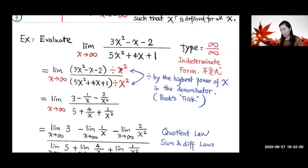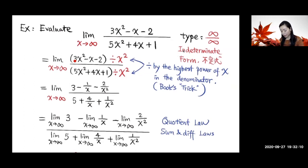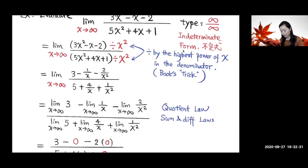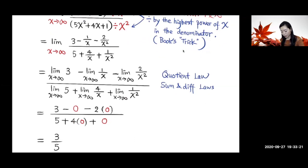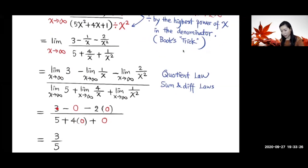The highest power in the denominator is x squared, so we divide everything by x squared. In the numerator: 3x² ÷ x² = 3, −x ÷ x² = −1/x, and −2 ÷ x² = −2/x². In the denominator: the first term gives 5, the second gives 4/x, and the third gives 1/x². By the quotient law, difference law, and sum law for limits, we can break this into separate parts — the limit of a quotient is the quotient of the limits, and similarly for sums and differences.